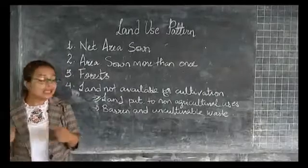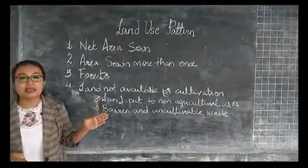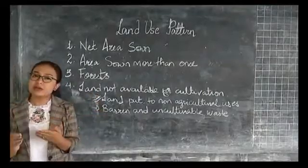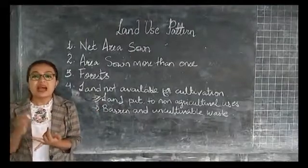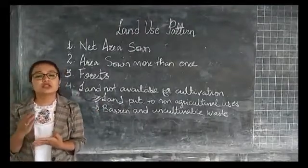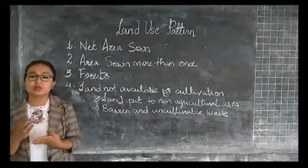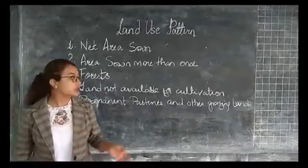Land not available for cultivation accounts for about 13.24% of the total reported area in 2011-12. The largest amount of land in this category is found in Andhra Pradesh, Rajasthan, Madhya Pradesh, Gujarat, etc.